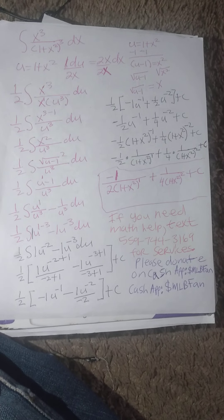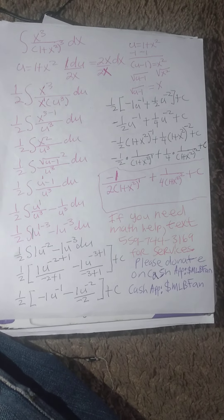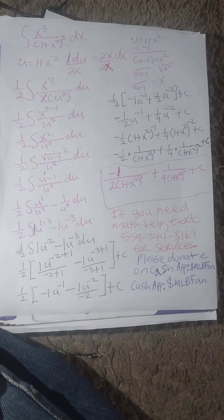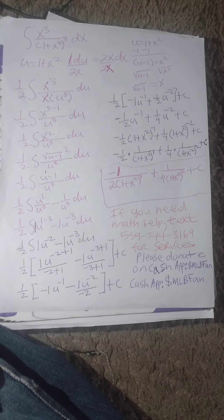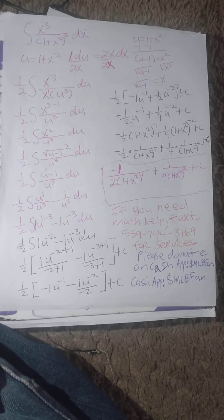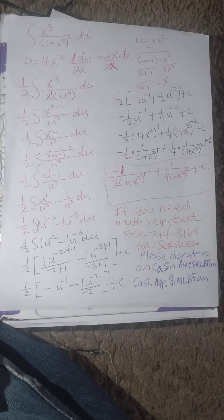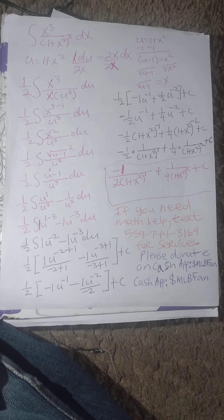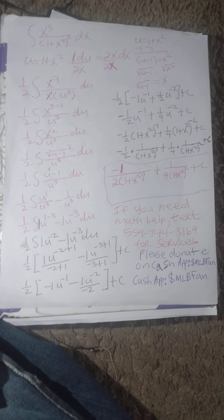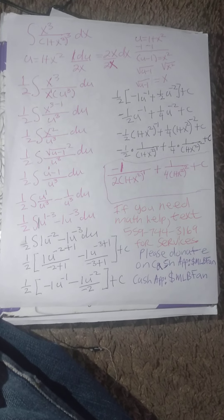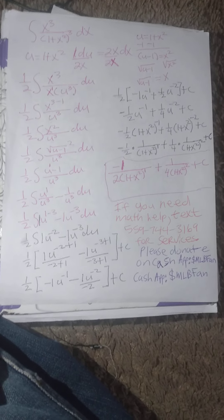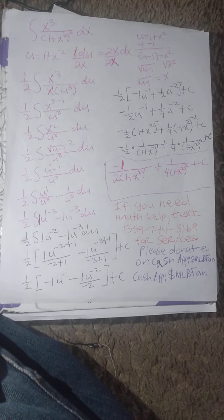Now, we need to solve for x after we do the quotient rule in the next step. So, 1 half times the integral of x to the third power minus 1 divided by u to the third du, which is going to be 1 half times the integral of x squared divided by u to the third power du.